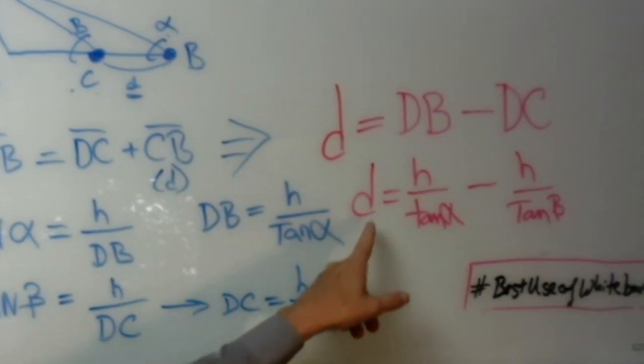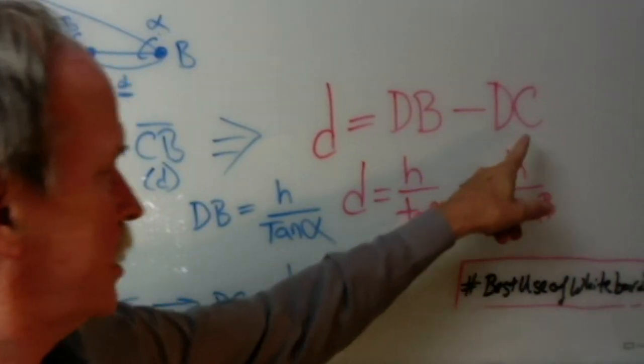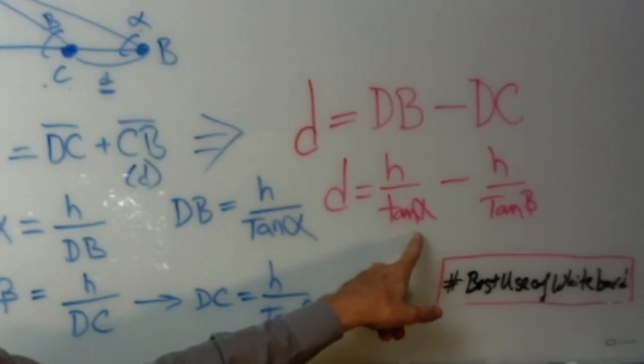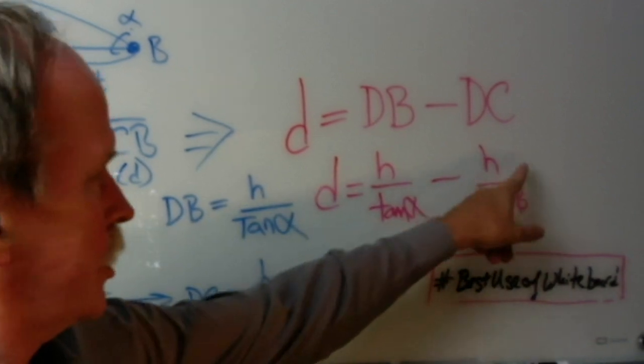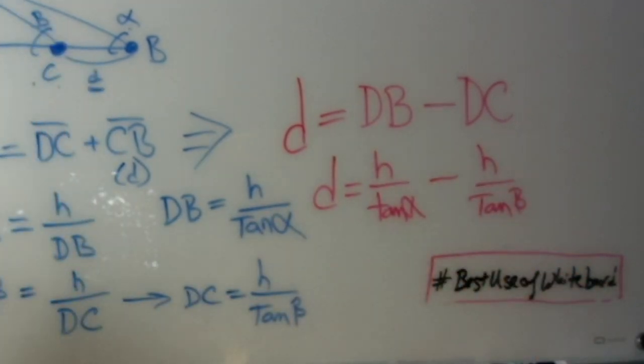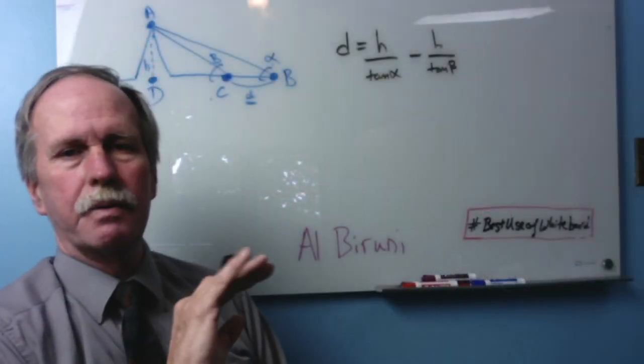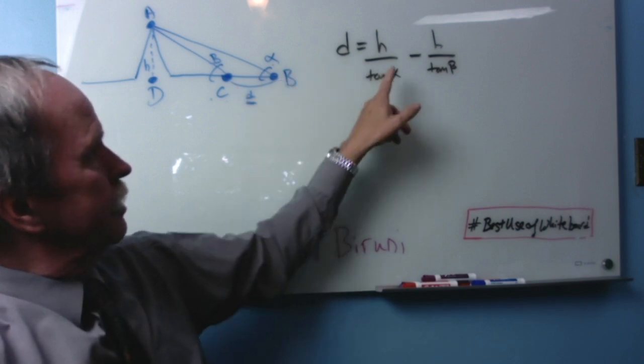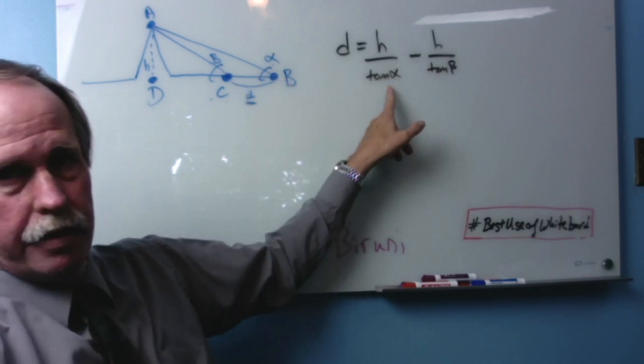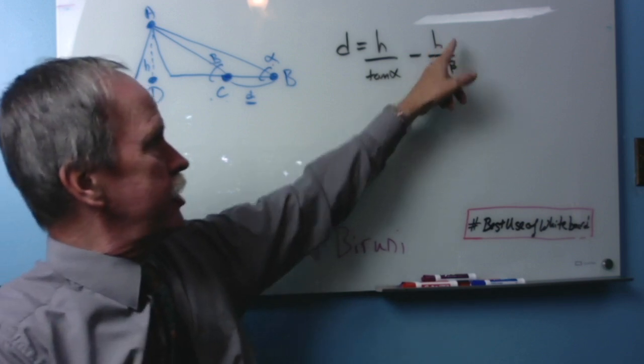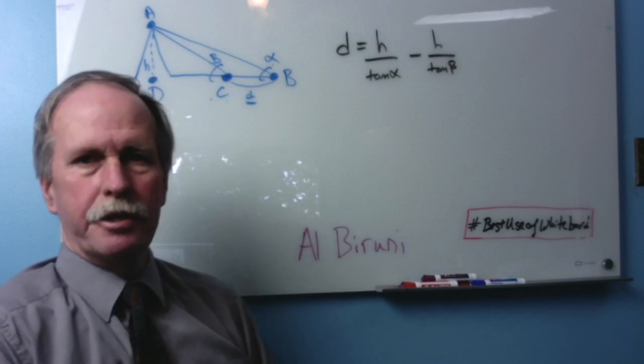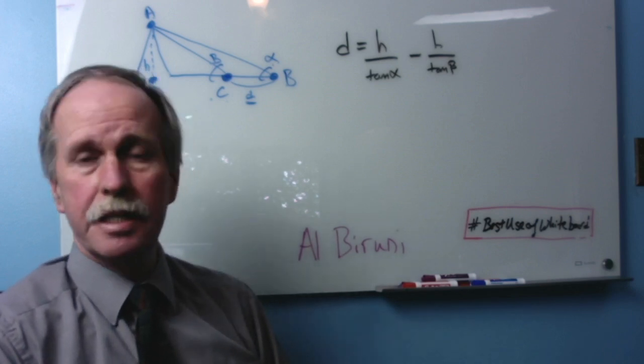Now we can substitute these values in for DB and DC. So we get D equals H over tan alpha minus H over tan beta. Are you starting to see how this is going to come together? So let's go ahead and see where we are now. D the distance we measured equals H over tan alpha minus H over tan beta. So what we want to do is we want to continue to work this and solve for H.